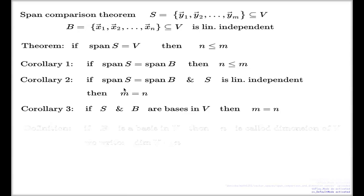And that's again, that's a corollary of the second statement here, because if S are bases, then the span of S and the span of B both equal to the whole vector space V, they're both linearly independent, so that's the case to apply the corollary number two.